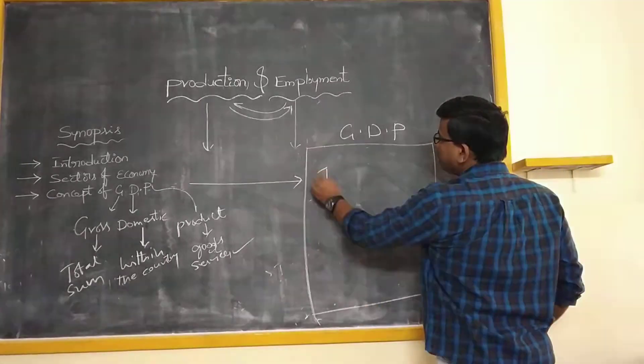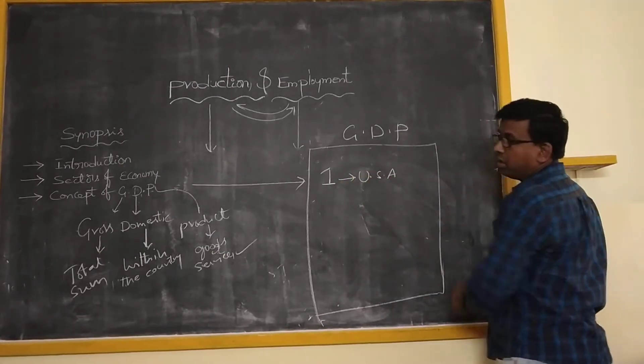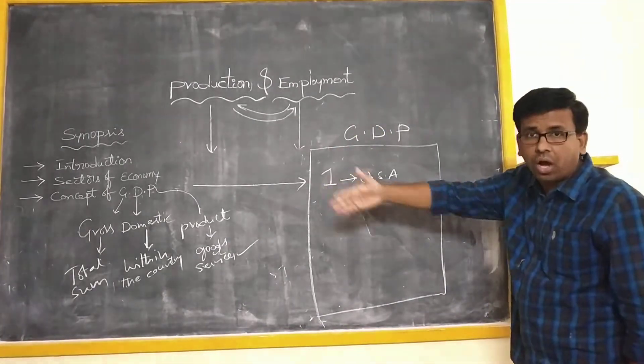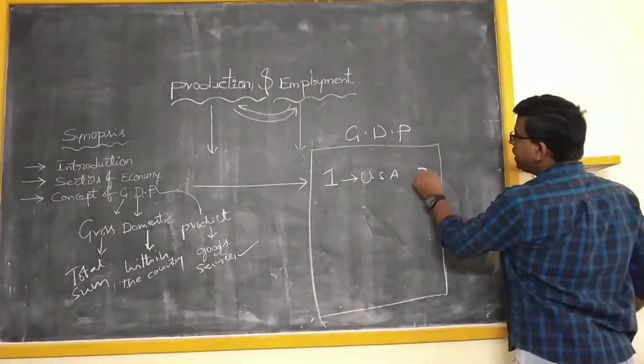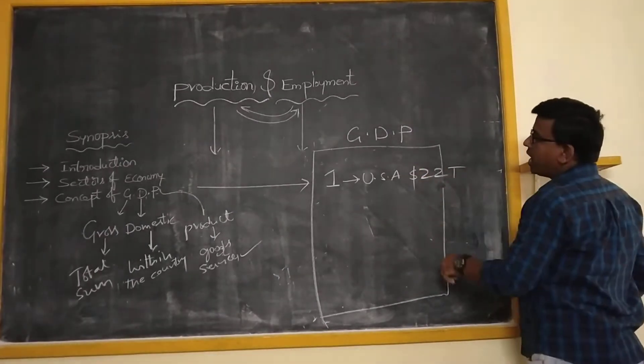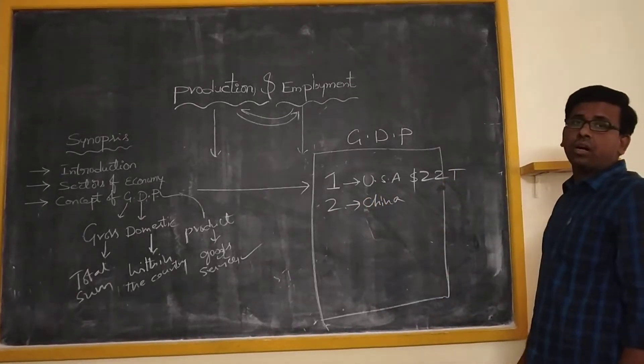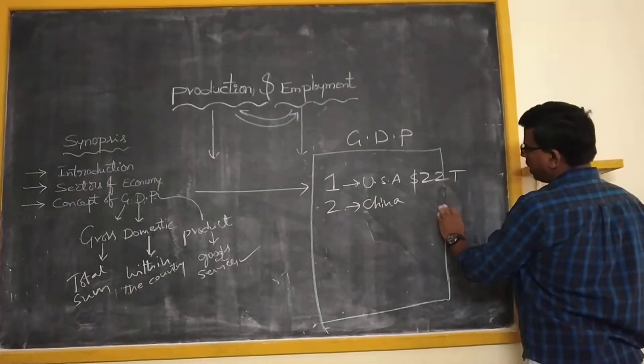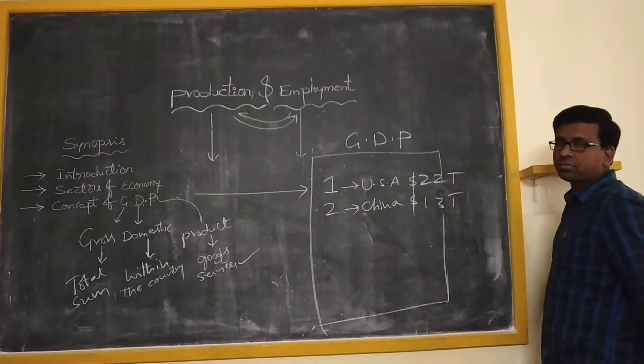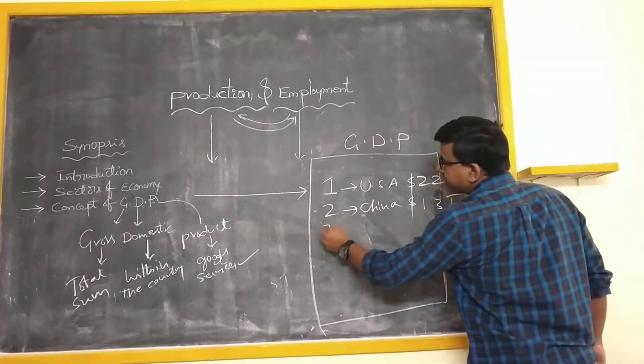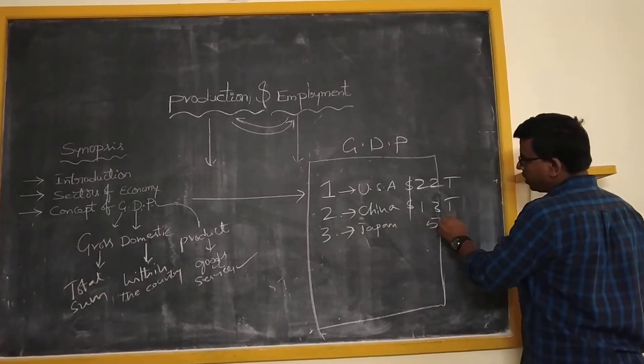Now the country which occupied the first position in the world is US, United States of America. What is the USA's GDP value, or the total income of the entire country USA, is 22 billion dollars. And the second position, where this country China comes in the second position, with around 13 billion dollars. These are all approximate values. And next, third position occupied by the country Japan, with 5 billion dollars.